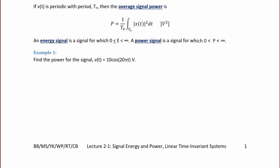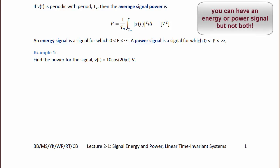An energy signal is a signal for which the energy is greater than or equal to zero and less than infinity. A power signal is one for which power is strictly between zero and infinity. The main thing to notice is that energy can be exactly zero but power can only be greater than zero and less than infinity. By these definitions, a signal can either be an energy or a power signal, but it cannot be both.